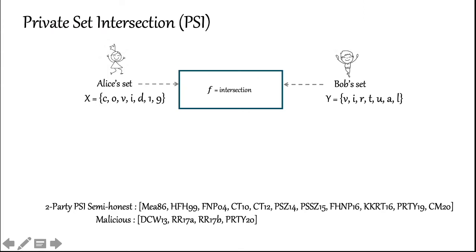Private Set Intersection or PSI allows two mutually distrusting parties to jointly compute the items they have in common. For example, if Alice's set has letters of the word COVID-19 and Bob has letters of the word virtual, then we expect Alice to learn the letters V and I and nothing else about Bob's set.